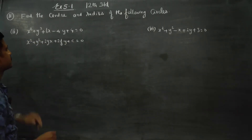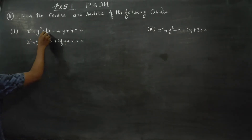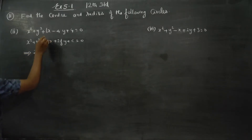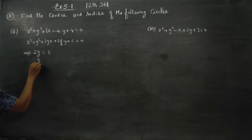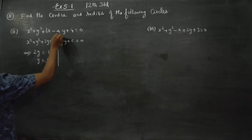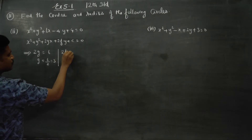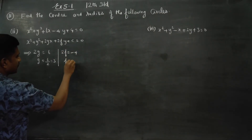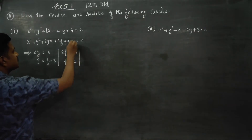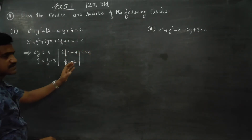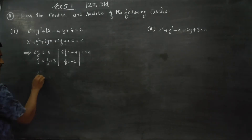Match the circle equation with the general form. What is my 2g? 2g is equal to 6, so g is equal to 6 divided by 2 — my answer is 3. Then 2f is equal to minus 4, so f is equal to minus 2. And c is equal to 4. Now g, f, and c are ready.